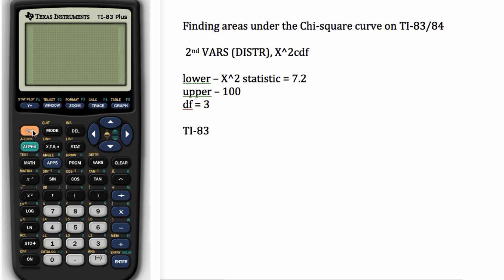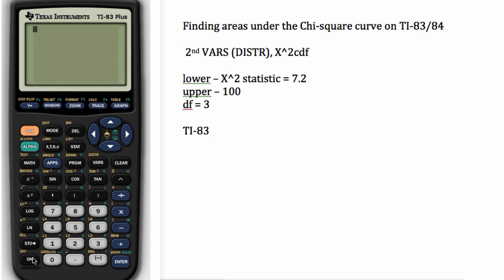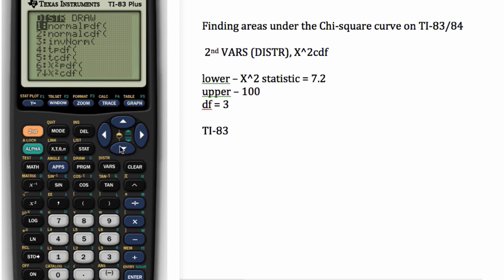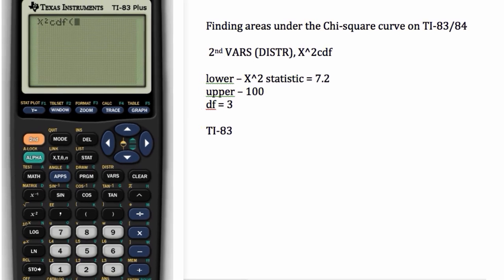We'll still go to second VARS or distribution. Turn it on first. Second VARS. And we'll find chi-squared, which in this case is number 7. Hit the chi-squared button.